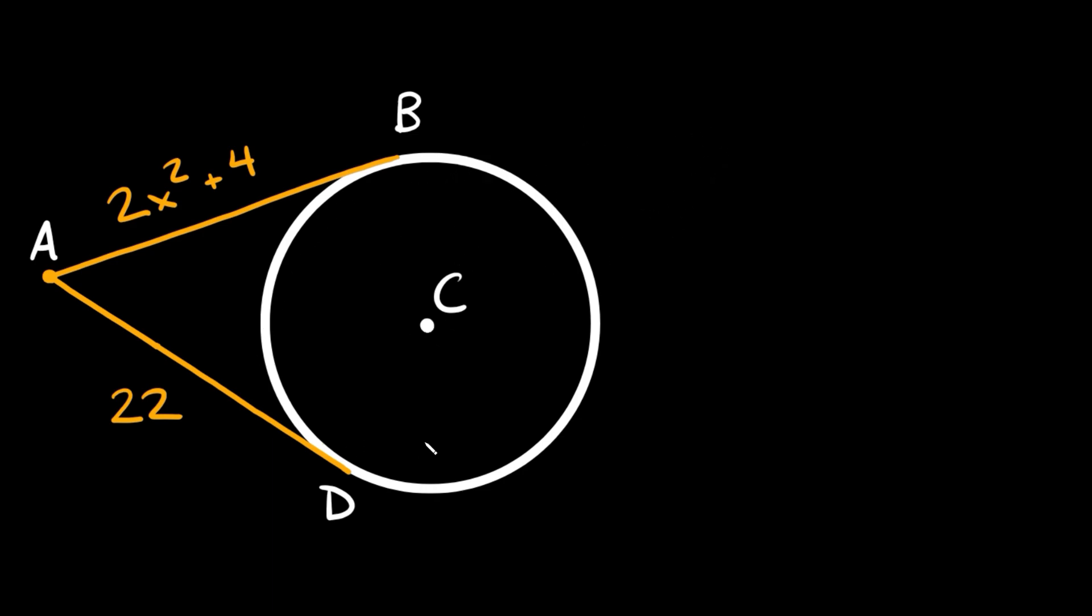So as you can see here we have circle C and we have some tangent segments out here, AB and also AD.